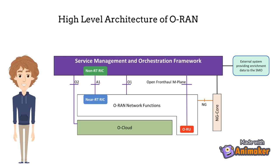The interfaces marked with a black line — between SMO and new generation core, and between SMO and the external system providing data to the SMO — are out of scope for open RAN. The O2 interface is between SMO and Ocloud. The A1 interface is between non-real-time RIC and near-real-time RIC. The O1 interface is between SMO and open RAN network functions. The Open Fronthaul M-Plane interface is between SMO and ORU. All interfaces — O2, A1, O1, and Open Fronthaul M-Plane — are defined by open RAN.